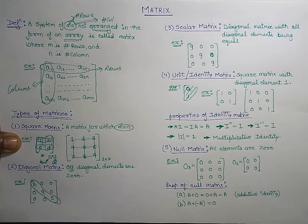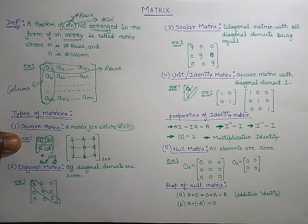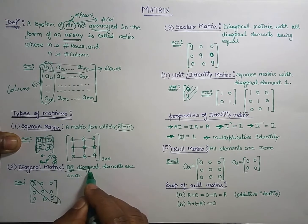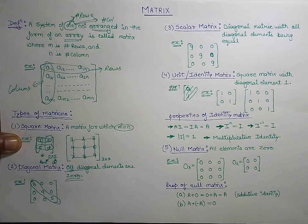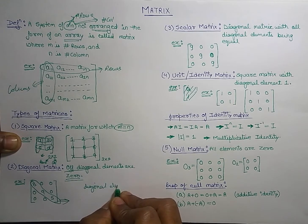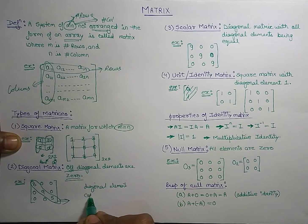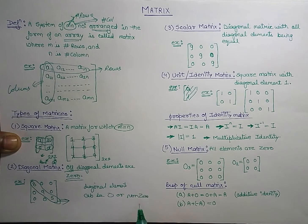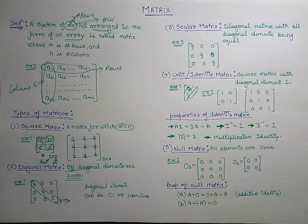The next type is the diagonal matrix. A diagonal matrix is one in which these elements along the diagonal are called diagonal elements. If all other elements except the diagonal elements are zero, then the matrix is known as a diagonal matrix. The off-diagonal elements must be zero, though the diagonal elements themselves can also be zero. The restriction is only on the off-diagonal elements.